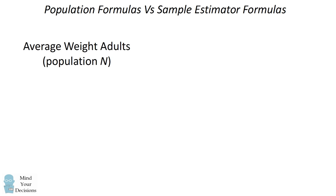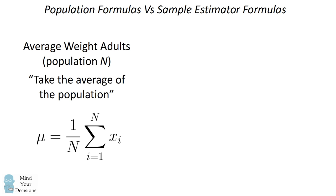So imagine you want to measure the average weight of all adults. And we have a population size of N, N is very big. If you wanted to find the average weight, you would add up each person's weight, and you would divide it by the population size. The population formula for the average weight, the average mean, is mu equals 1 over N times the sum of each person's weight.